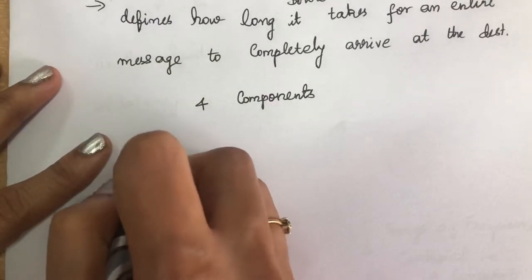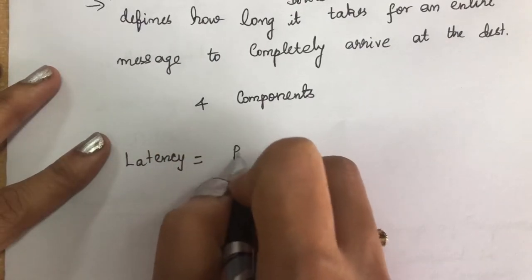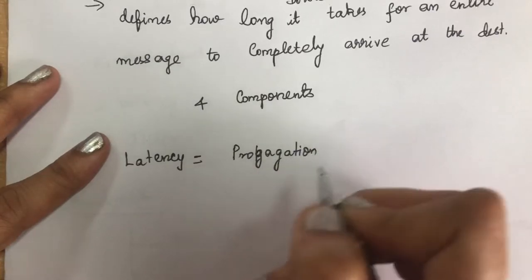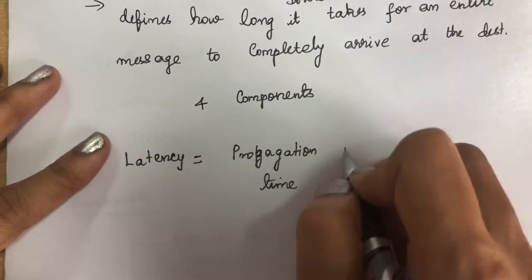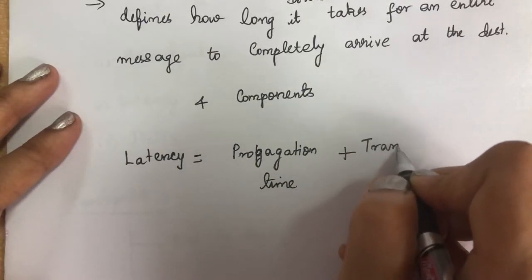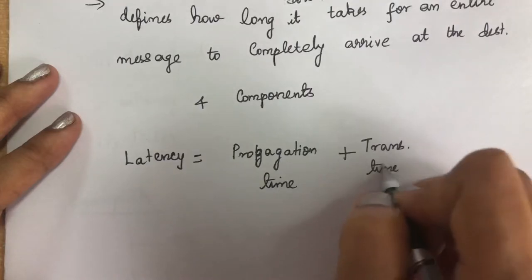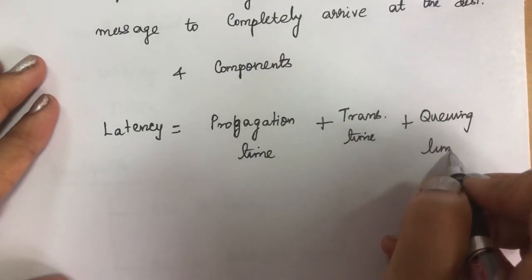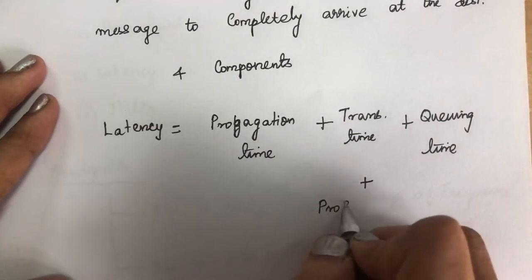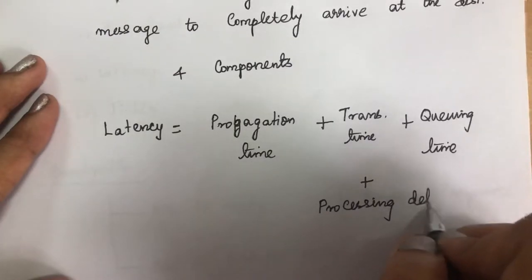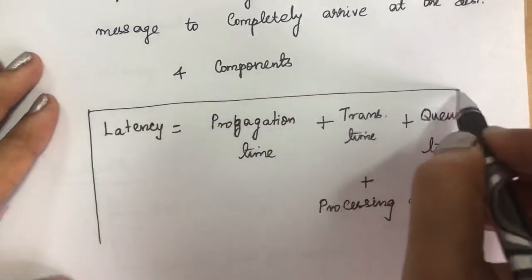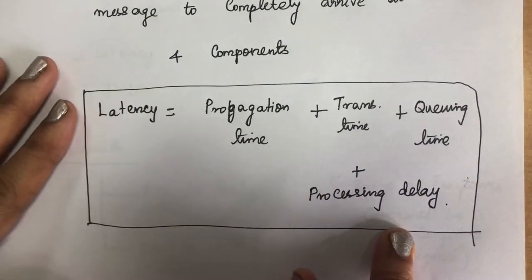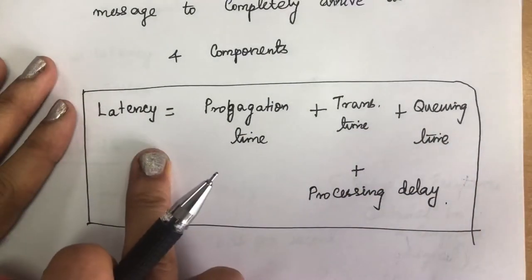Latency has four components and can be calculated as: propagation time plus transmission time plus queuing time plus processing delay. When we add all four components, we get the latency.